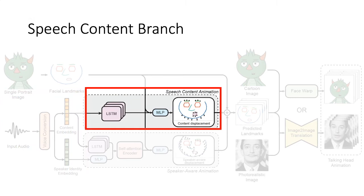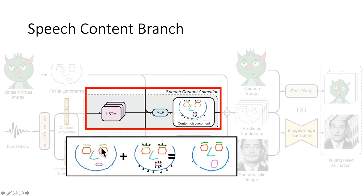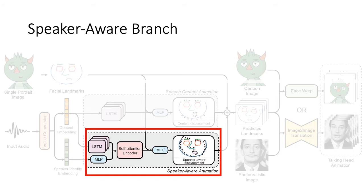We use the content embedding to drive what we call the speech content branch, which generates more universal mouth region movement, very similar to related work. Our method takes an input landmark as the base face configuration and predicts the displacement, which generates the final animation. The bottom branch takes the speaker identity embedding predicted from the voice conversion module. At the speaker awareness branch, this indicates not just the lip region — the nose might move, the head motion might move. This captures the stylized parts.